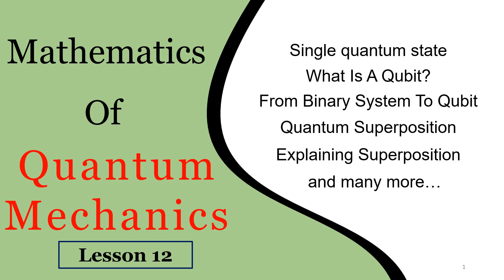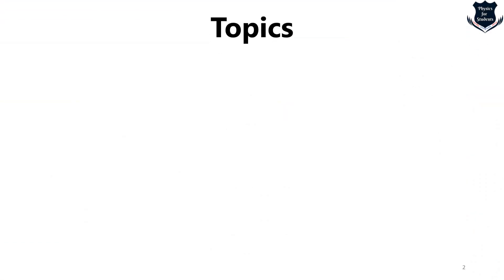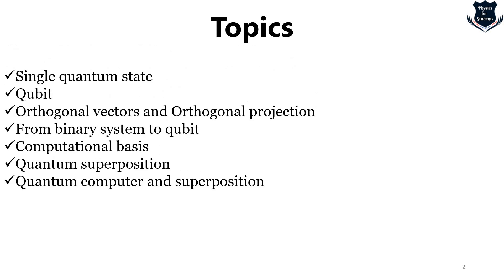Welcome to lesson number 12 of this video. First we would like to look at what are the topics that we are covering. We are covering what is a single quantum system, we would understand what is a qubit. We will also recap orthogonal vectors and orthogonal projection because that is how the quantum system is later written. From binary system to qubit, what is called a computational basis, what is quantum superposition, and finally how quantum computer exploits the power of quantum superposition, thereby exceeding abnormally in terms of speed of computation.